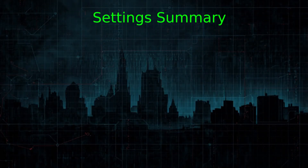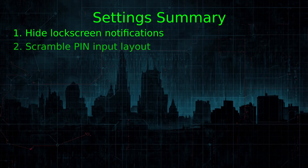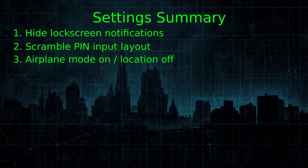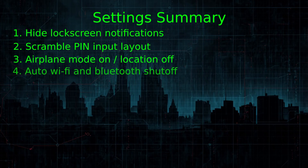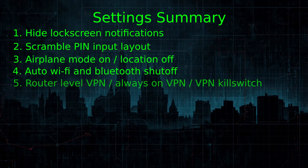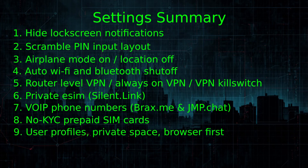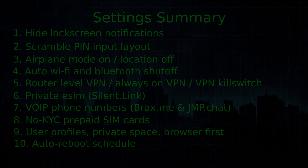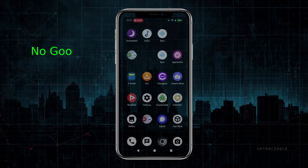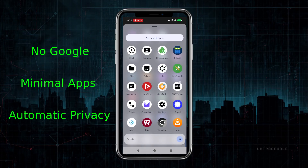So here's the full system: hide lock screen notifications, scramble PIN input layout, Airplane Mode on by default and Location off, auto Wi-Fi and Bluetooth shutoff when not in use, router-level VPN at home, always-on VPN on my phone when I'm not at home, VPN kill switch, Silent.link eSIM for data, brax.me and jmp.chat for VoIP numbers, prepaid SIM card bought with cash with no KYC, user profiles to separate banking apps, private space to hide apps, browser first — don't install apps unless you absolutely need to — and finally an auto reboot schedule. This is what I actually use: no Google services on my phone, minimal apps, and privacy and security baked into my daily habits.